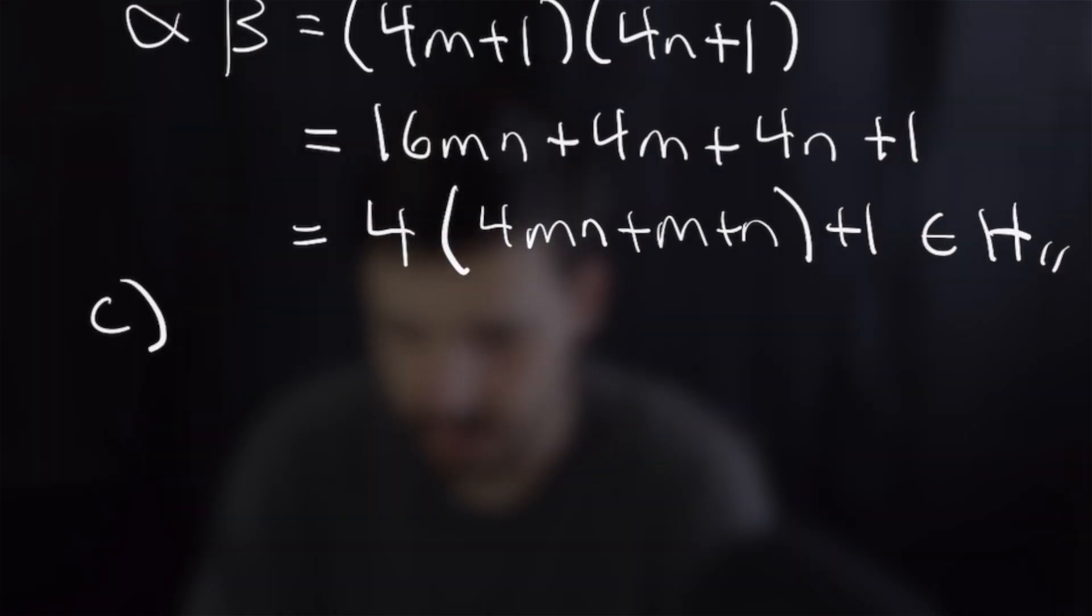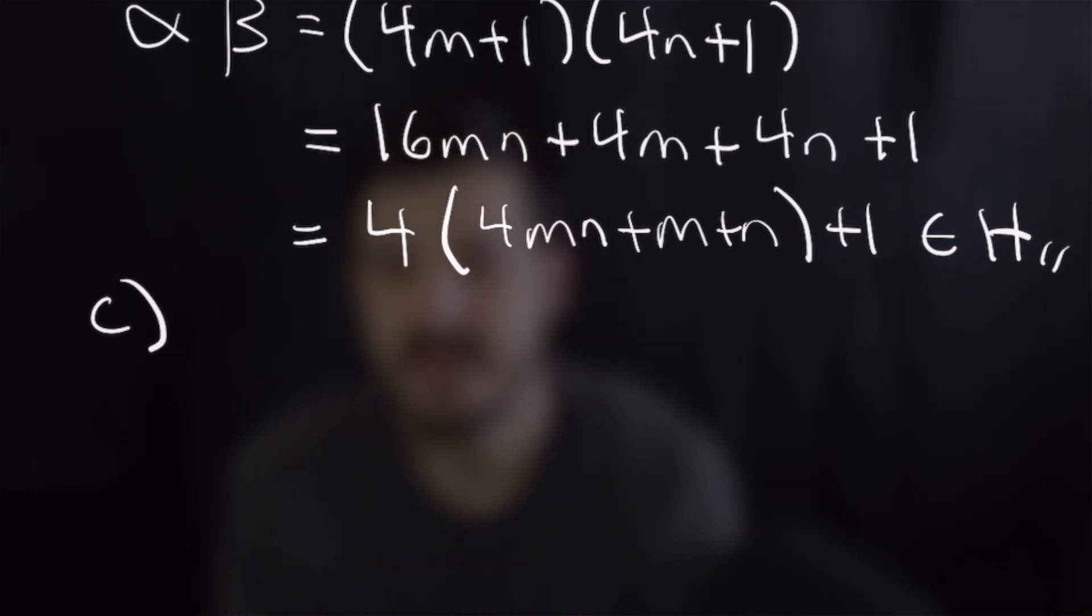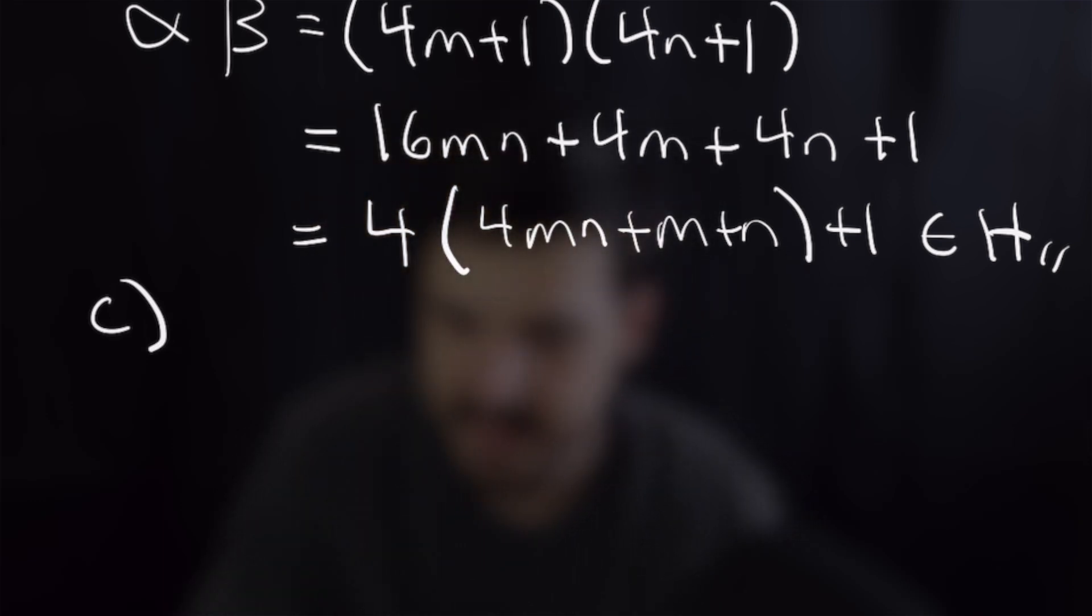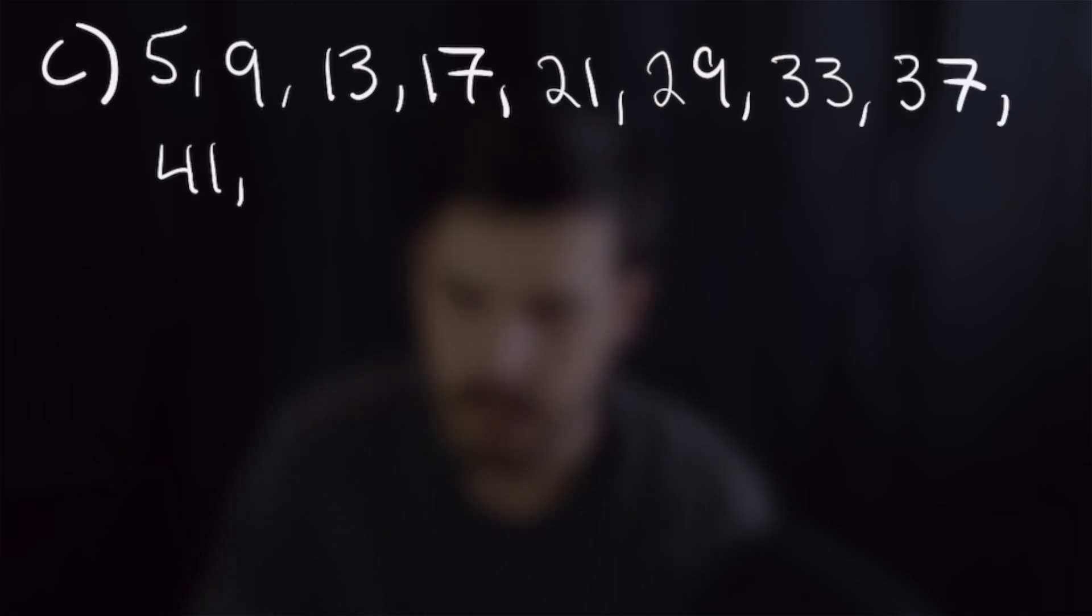Now for part c we are going to write out our first 10 Hilbert primes and a Hilbert prime is like a regular prime except it is any number that can only be expressed as 1 times itself and not any other combination of Hilbert numbers. So for example 9 is a Hilbert prime because it can be expressed as 1 times 9 but 3 is not a Hilbert number so it does not count. So our first 10 Hilbert primes are actually very nearly our first 10 Hilbert numbers and those are going to be 5, 9, 13, 17, 21 all the way up to 49.